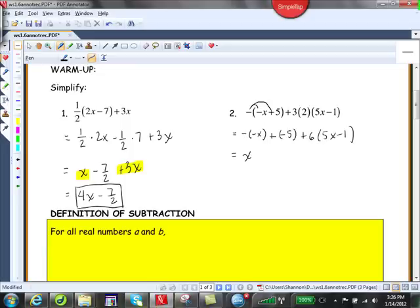And notice I just distributed this minus throughout the parentheses. So the opposite of the opposite of x is positive x. We will have minus 5. And then distributing the 6 throughout, we will get plus 30x minus 6. Now we've got like terms, x and then positive 30x. And remember that constants are always like terms.